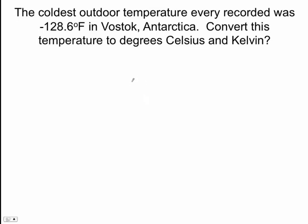In this video, I'm going to show you how to do some problems from chapter 12. So here's the first type of problem, it's a temperature conversion. The coldest outdoor temperature ever recorded was -128.6 degrees Fahrenheit in Vostok, Antarctica.